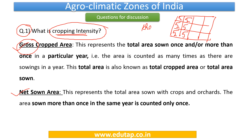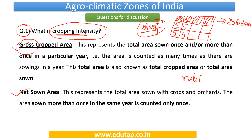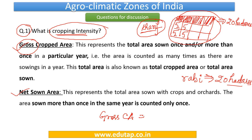Let us take the Kharif season. In this season, we are planting 4 patches of land, each being 5 hectares, so a total of 20 hectares of land have been cropped. Now in the Rabi season, we are again cropping the same land that was used during the Kharif season, so again a total of 20 hectares is cropped. Our gross cropped area is going to be 20 plus 20, a total of 40 hectares.